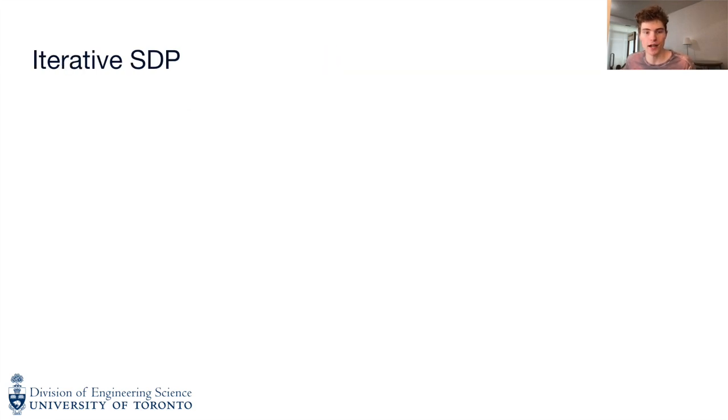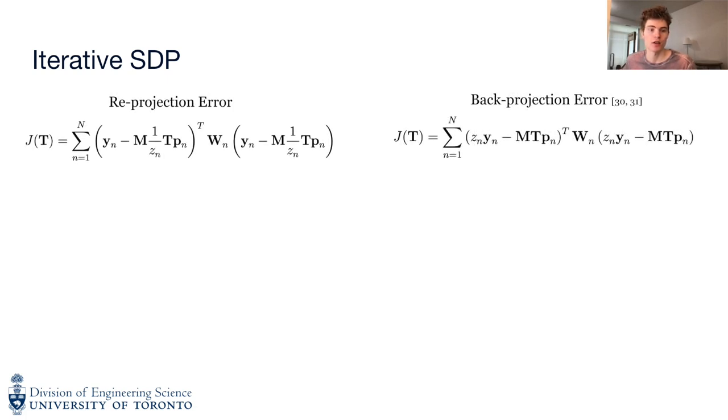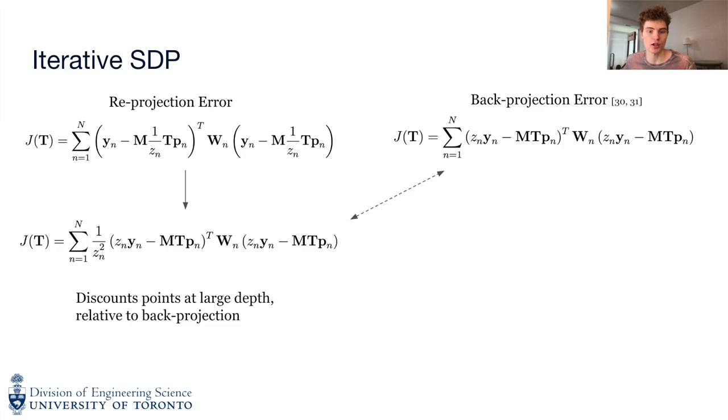Taking a step back, let's compare our reprojection error to the back projection error. From the literature on optimal PNP algorithms, we know that the SDP relaxation of the back projection error function is tight. We observe that these two functions differ by a per-point weighting based on the depth. Namely, the reprojection error discounts points at a large depth by a factor of the inverse depth squared with respect to the back projection error.